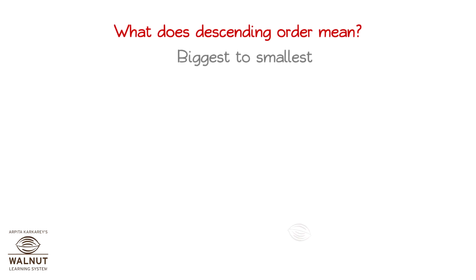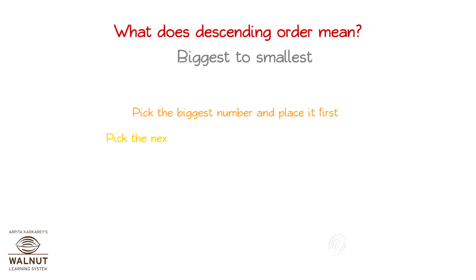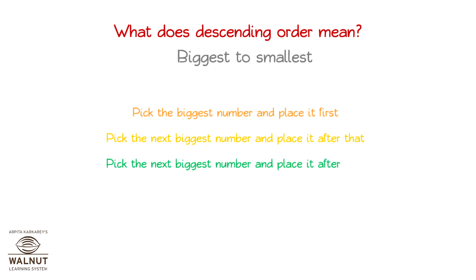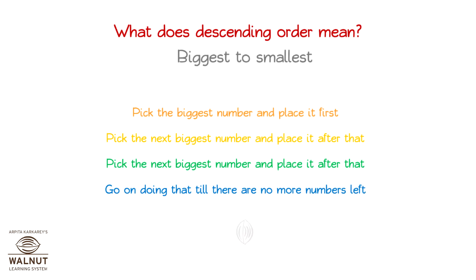When we have to arrange numbers in descending order, what do we do? These are the steps to follow. Pick the biggest number and place it first. Pick the next biggest number and place it after that. Go on doing that till there are no more numbers left.